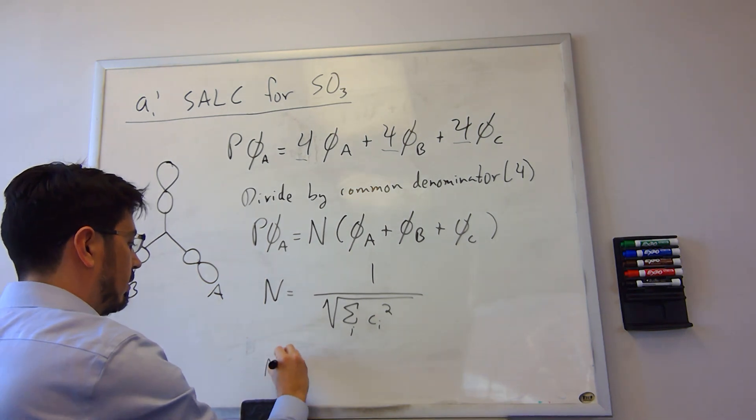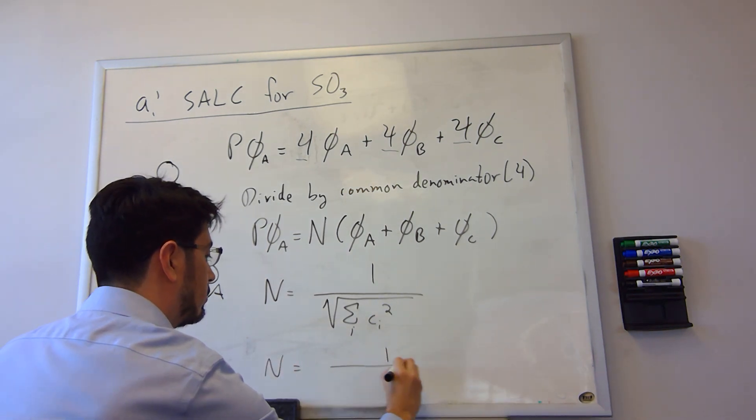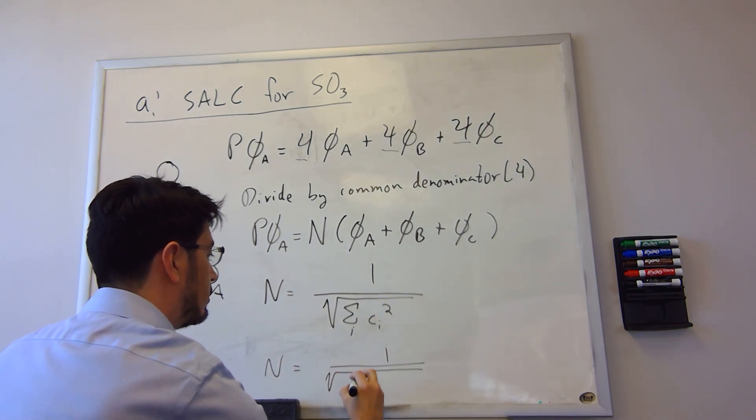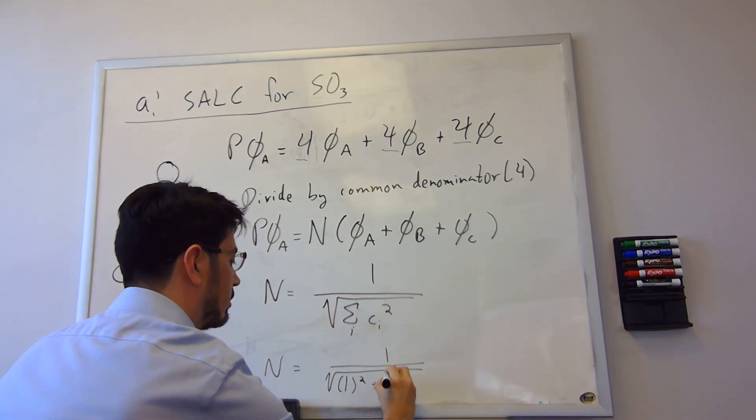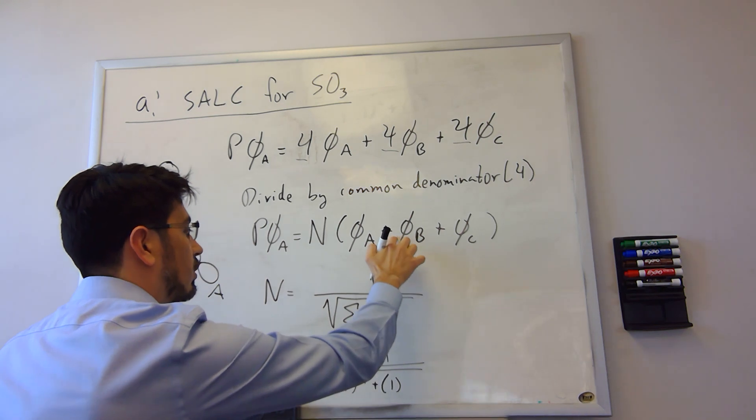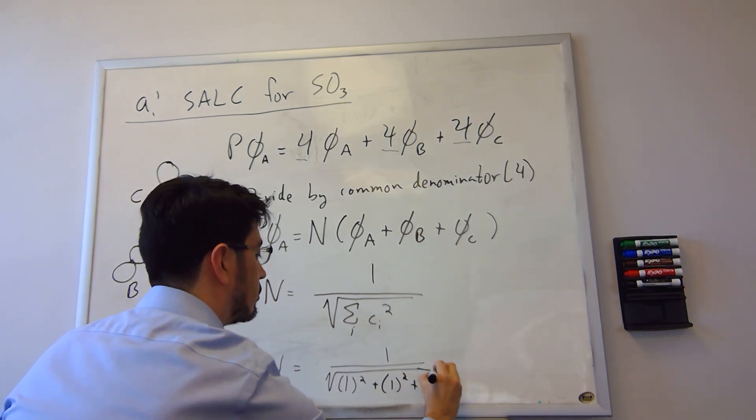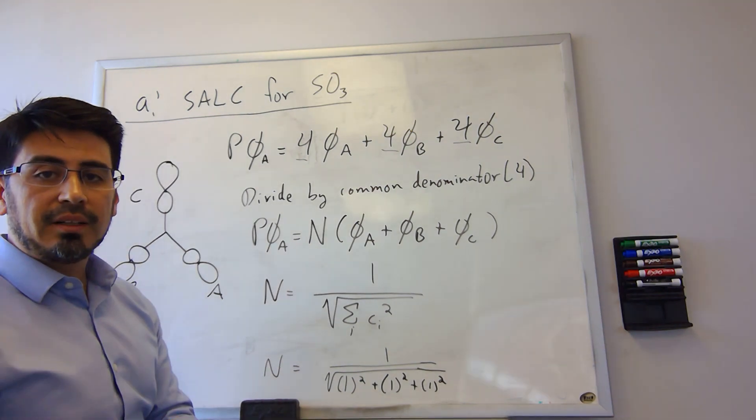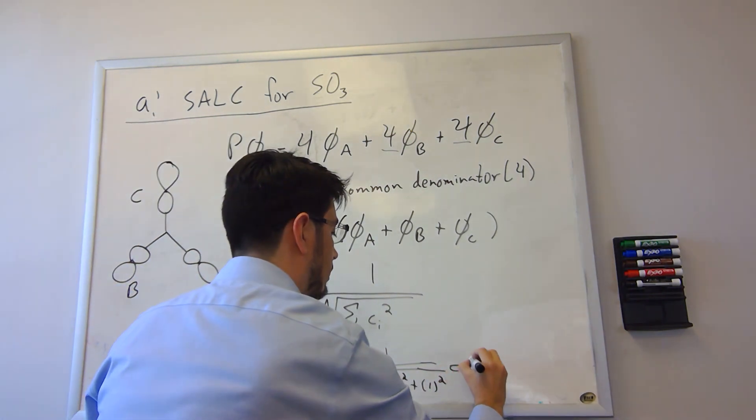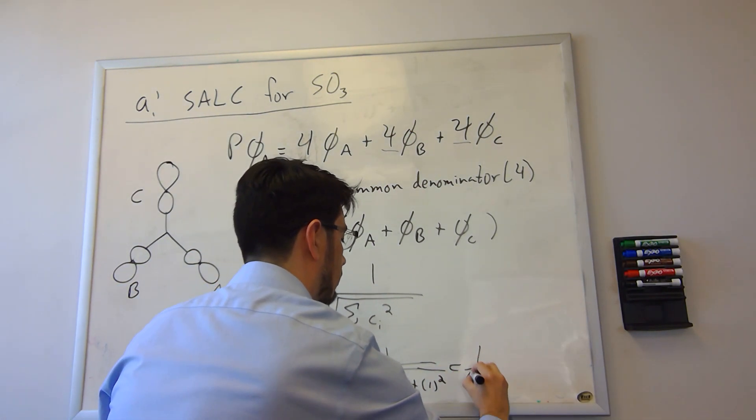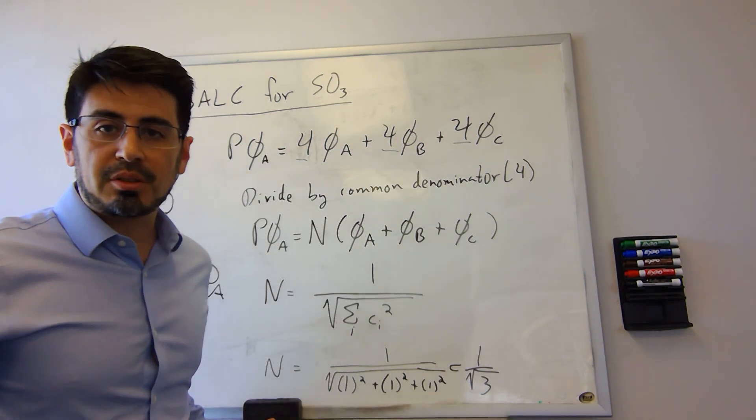And so in this case, we have N is going to be equal to 1 over the square root of 1 squared plus 1 squared plus 1 squared. And that's just equal to 1 over root 3.